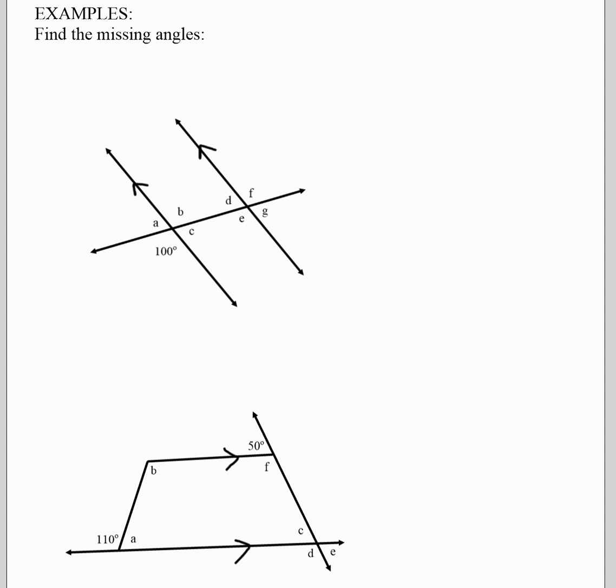So for example, in this picture here, we have to find all of these letters. The first few are often quite easy. For example, B is also 100 degrees because it is opposite. And A would be 80 degrees because it is supplementary. And then C is either opposite to A or supplementary to the 100. The part that's a little more challenging is to find the ones on the other side.